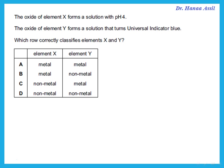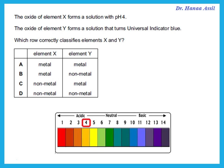The oxide of element X forms a solution with pH 4 — pH 4 is acidic. The oxide of element Y forms a solution that turns universal indicator blue, which means it is a base. So if X forms an acidic oxide, X must be a non-metal — metals form basic oxides, non-metals form acidic oxides. Y forms something that's a base, so Y has to be a metal.